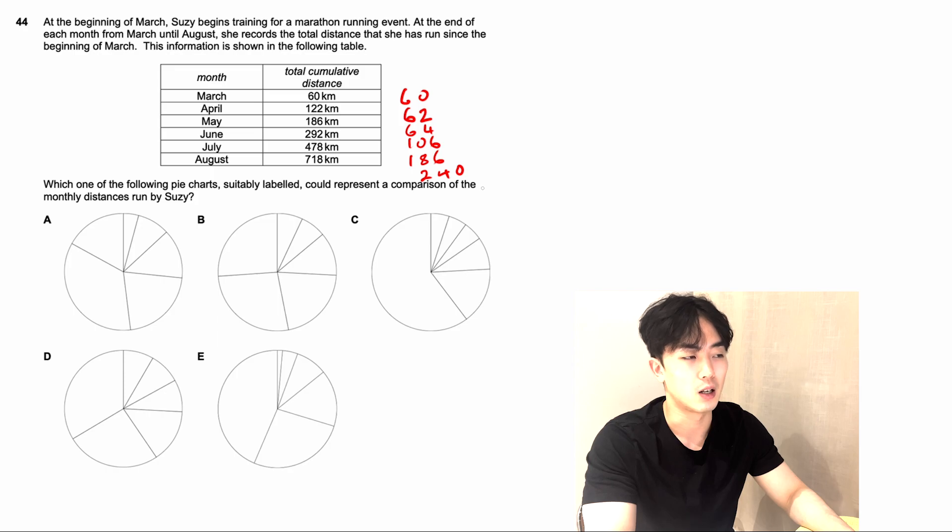From this pie chart, you have to identify roughly similar values. As you can see here, it's most likely going to be D, because these values here are roughly similar sized pie charts, and they get progressively bigger, which follows the rest of the table.